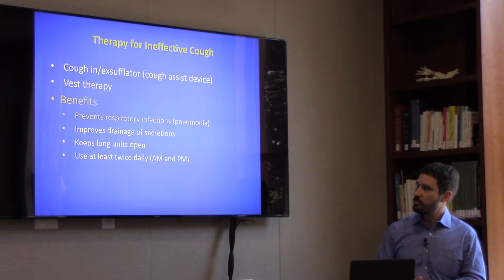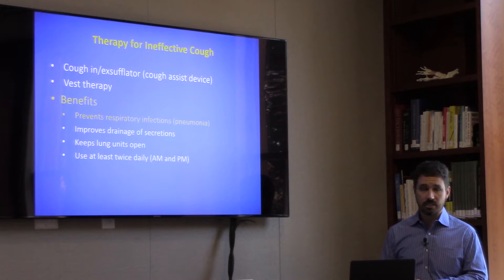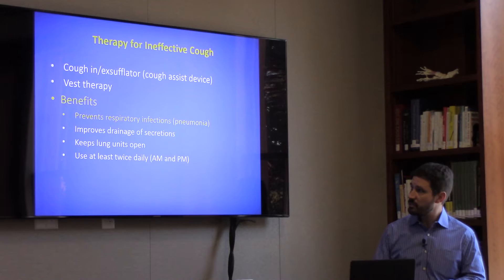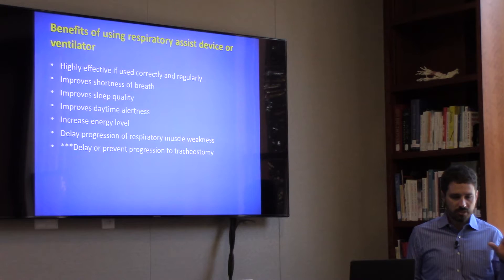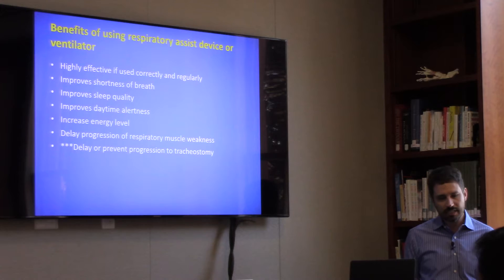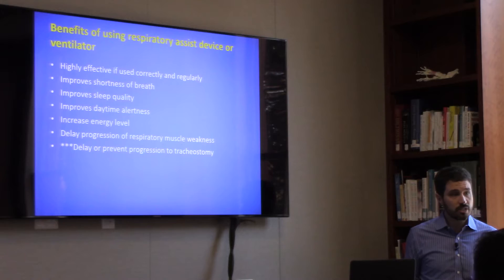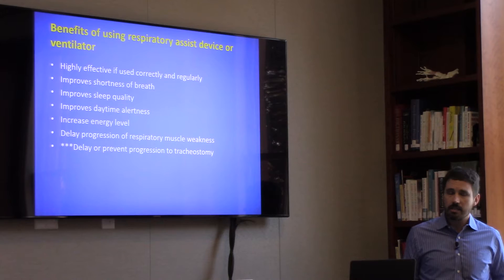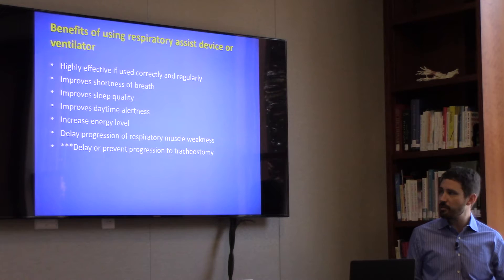Preventing respiratory infections is really what we're after, because as those muscles get weaker and secretions stay and don't mobilize, that can lead to pneumonia, infections, hospitalization, and a lot of problems. These can be used at least twice daily if needed. The benefits of using a respiratory assist device or ventilator include improving sleep quality — so you're not struggling to get oxygen in and carbon dioxide out, which are both stimuli for awakening. We tend to see more daytime alertness and increased energy level. The muscle weakness progression tends to slow, and folks who have these kinds of devices can actually live longer. They can also delay the time to the need for a tracheostomy.